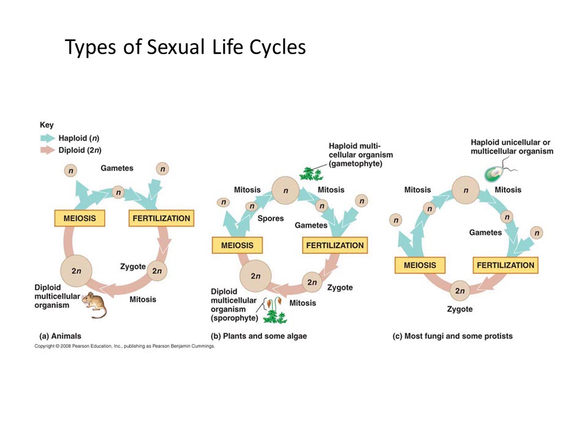Before we talk about the sexual life cycles of fungi, I want to remind you about this diagram that you've certainly seen before. It shows the different types of sexual life cycles found in animals, plants, and fungi. Notice that in all three of these life cycles, there is an alternation of a diploid and a haploid form. The process of meiosis, which reduces the chromosome number from diploid to haploid, alternates with the process of fertilization, where two haploid cells join to form a single diploid cell — the zygote. In lab, we'll examine the sexual life cycles of the three phyla of fungi already mentioned.